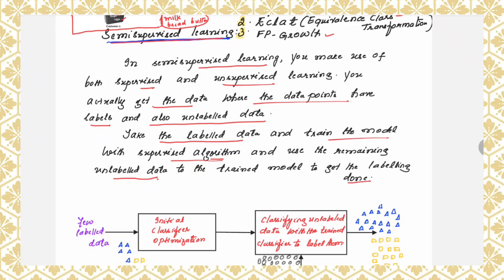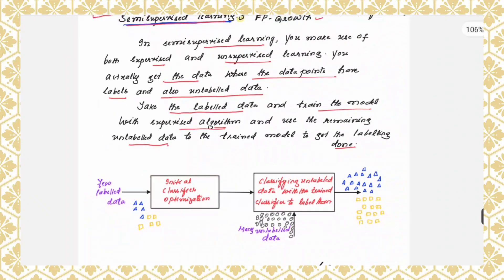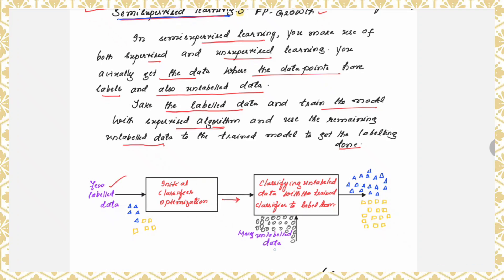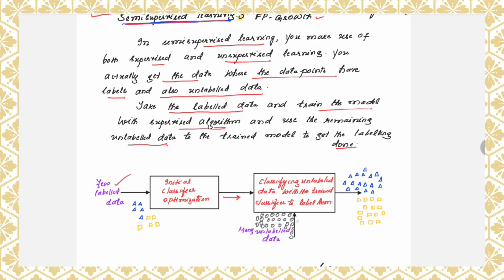Here is a diagram to help you understand the functioning of semi-supervised learning. You have a combination of both labeled and unlabeled datasets, but the labeled dataset will be less compared to the unlabeled dataset. A few labeled data points are fed to a supervised learning algorithm, then the unlabeled dataset is given in the next stage. The algorithm will try to give labels based on whatever it learned from the labeled data, and you can see the final output from this.